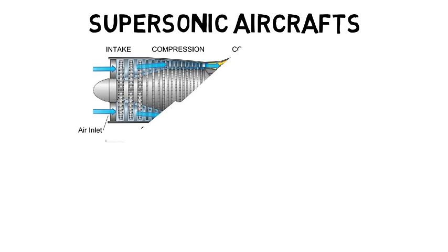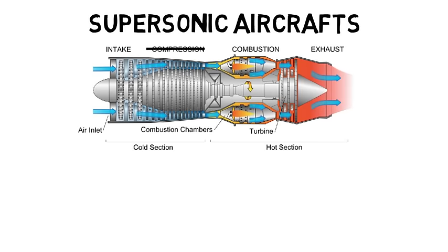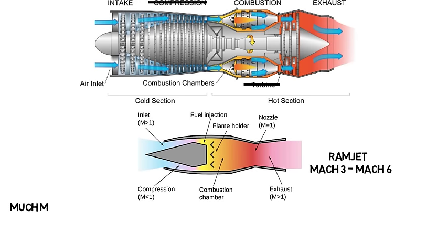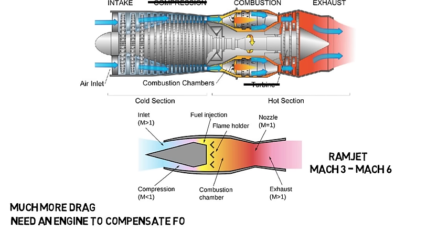But what about for supersonic aircrafts? At supersonic speeds that are high enough, the engine doesn't require a compressor or a turbine here for reasons you'll learn about that relate pressure and temperature of the fluid. If you remove those, we have what is called a ramjet. These are best used for aircrafts flying between Mach 3 and 6. Supersonic aircrafts, like I said, experience much more drag at those high speeds, meaning the air is pushing back on the aircraft to slow it down more, therefore you need an engine that can supply the right amount of force to compensate for this.